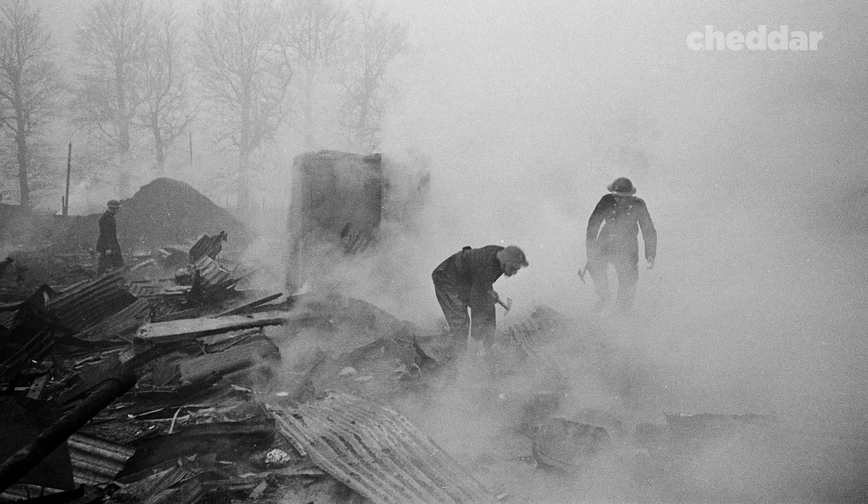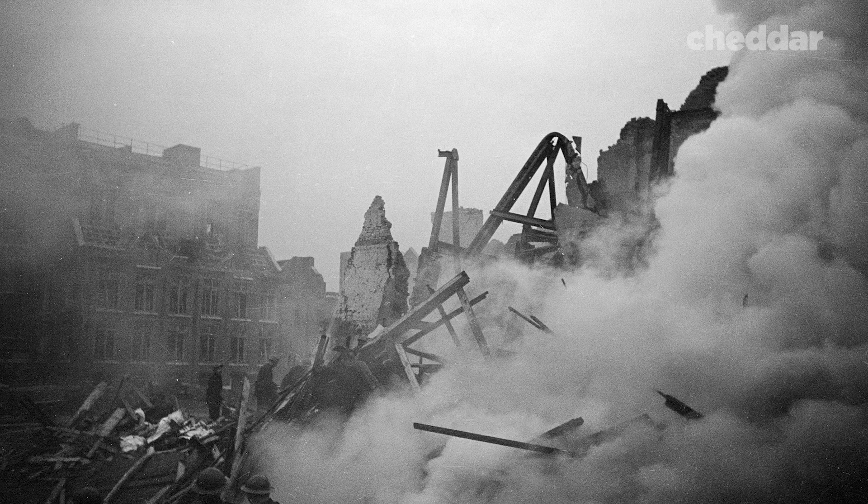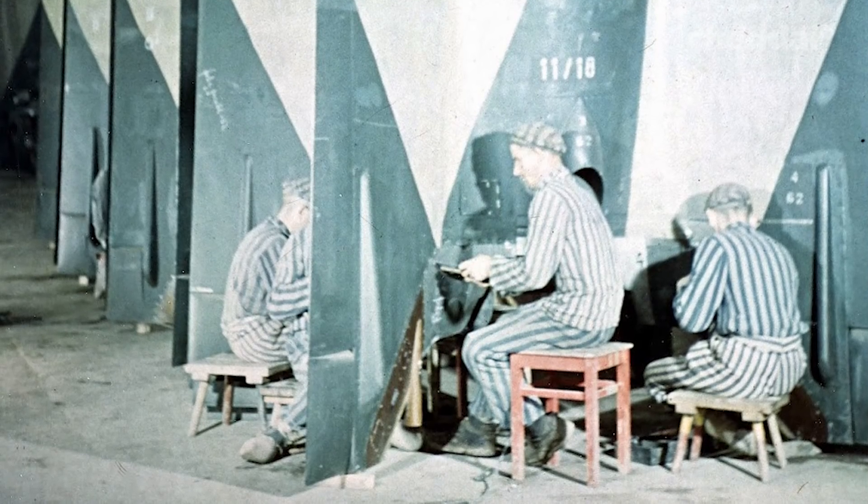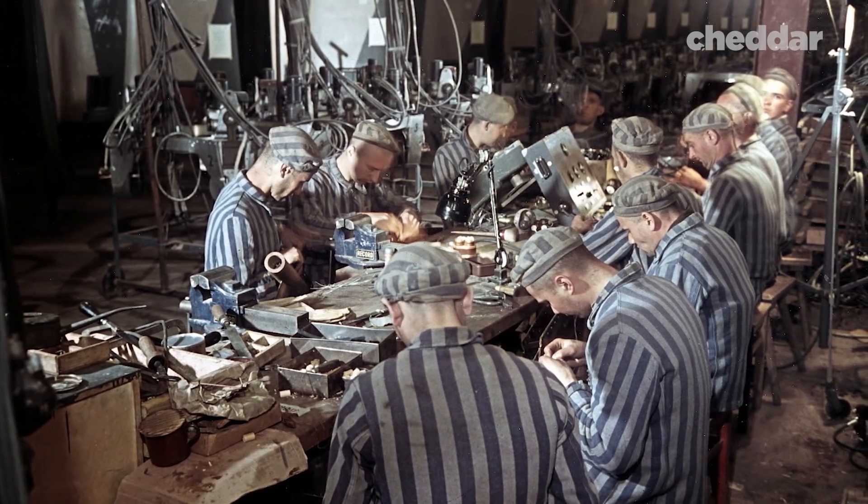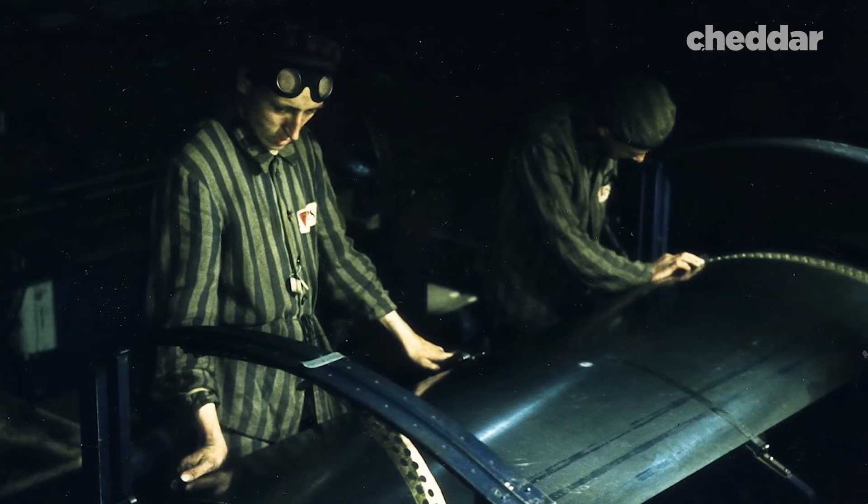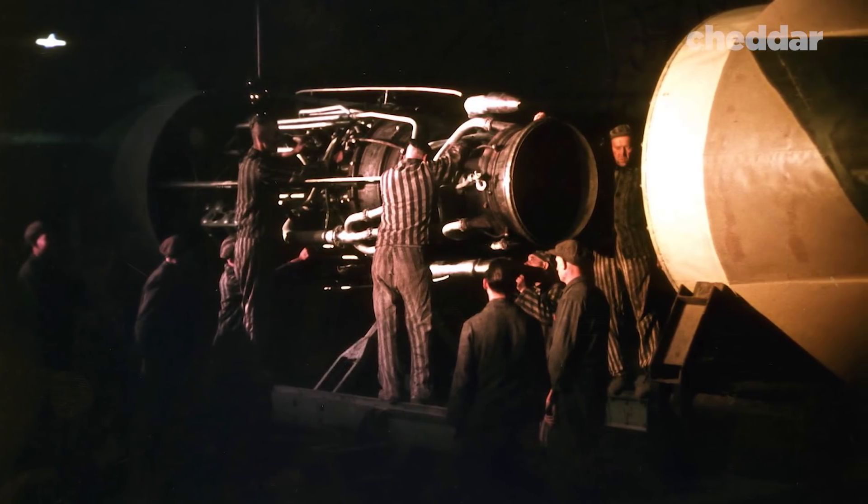The V-2 missile killed thousands in bombardments of cities like London and Antwerp. But far more died building that weapon. The Nazis kept V-2 production running with concentration camp labor. Relentless hours, malnutrition and horrendous conditions in the tunnels prisoners lived and worked in killed an estimated 10,000 people.